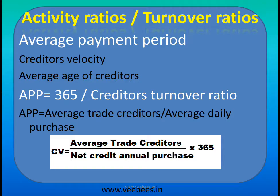The average payment period is also called average age of creditors. It is equal to 365 divided by creditors turnover ratio, or equivalently, average creditors divided by average daily purchase, which equals average creditors divided by net credit annual purchase, multiplied by 365.